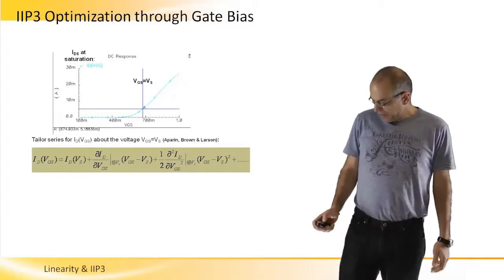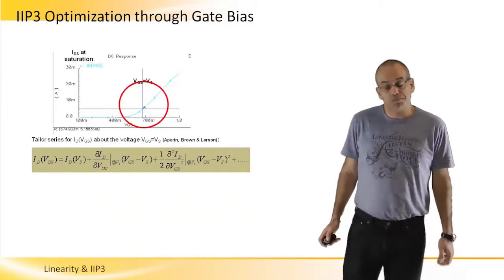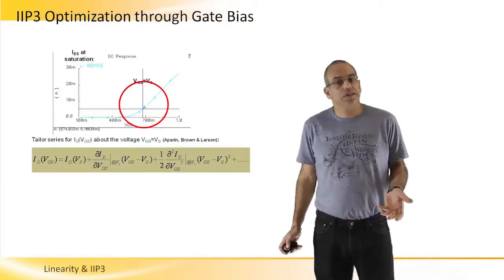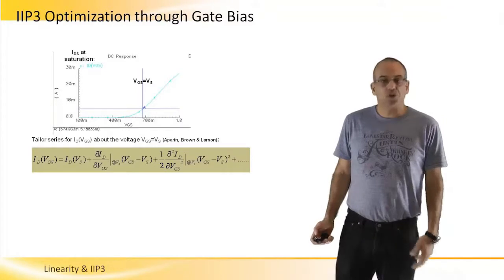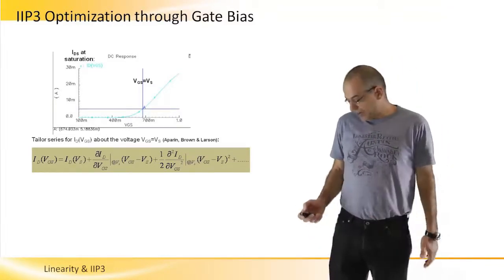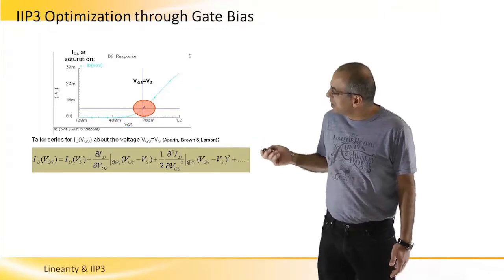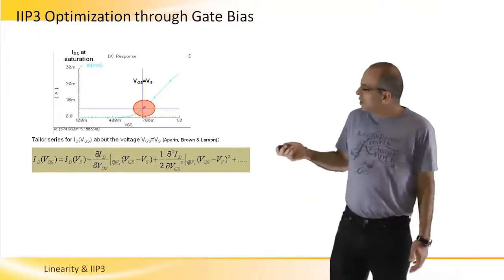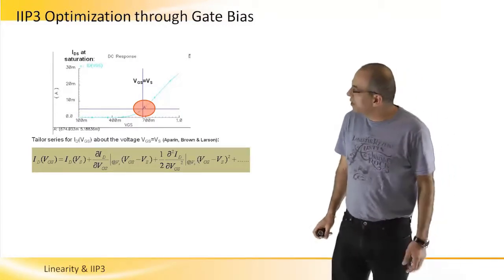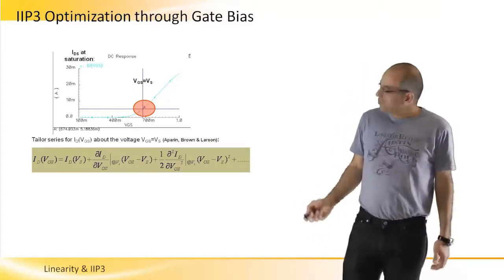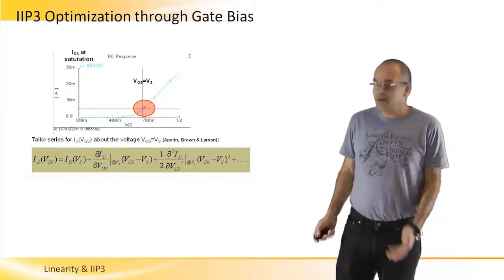So what they did is they looked at the drain source current of the transistor and they just described it as a Taylor series around the point VGS equals VS. And so we have an infinite number of polynomial elements. And by using Taylor series, we can describe them.